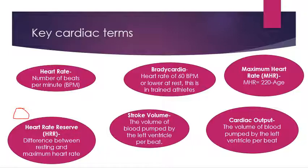Heart rate reserve, otherwise known as HRR, is the difference between our resting and our maximum heart rate. We work out resting heart rate by measuring beats per minute whilst sitting still and not moving, then subtract that from our maximum heart rate — 220 minus age — to give us our heart rate reserve.